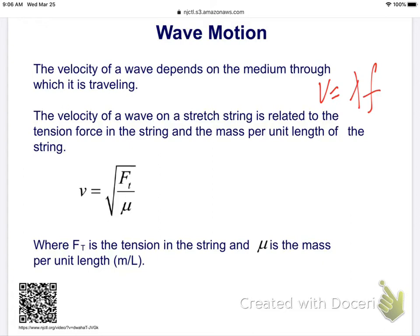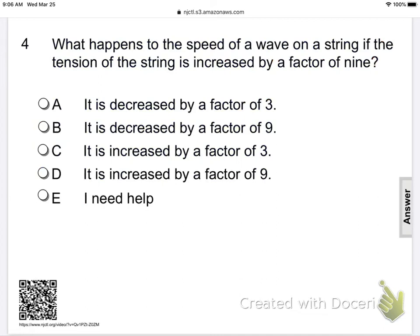Our first velocity equation is lambda f. We've already completed that. Our second equation has to do with the velocity depending upon the medium it's traveling through. That equation is velocity equals the square root of tension force over the mass per unit length of the string. The mass per unit length of the string is known as mu. Tension force is the tension in the string, and mu is the mass per unit length. It's how heavy the string is for its length.